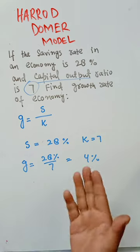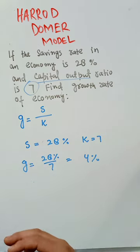Growth rate in a Harrodian economy is equal to saving-income ratio divided by capital output ratio.